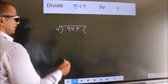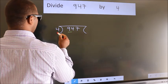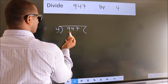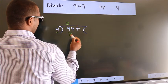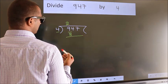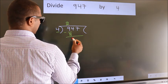Next. Here we have 9, here 4. A number close to 9 in 4 table is 4 twos, 8. Now we should subtract. We get 1.